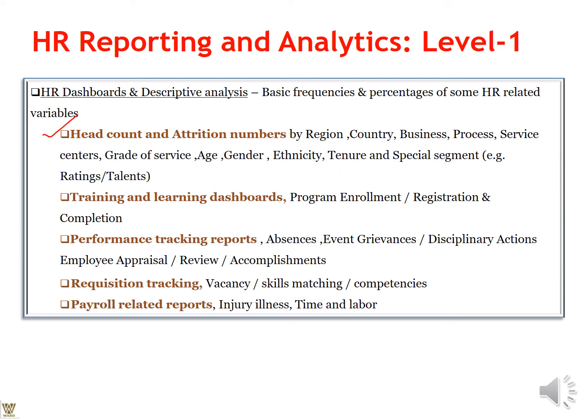You have a headcount and attrition dashboard. Then there is the training and learning dashboard — how many trainings the incumbent has undergone, registrations done, completions, and successful accomplishments. Then comes the performance tracking report covering absences, grievances, disciplinary actions, employee appraisals, reviews, and accomplishments — including leaves and any grievance or disciplinary issues. Request tracking covers vacancies, skills matching, and competencies. Payroll-related reports would include injury time and labor output. This is Level 1, giving an overview of how the organization is faring right now.